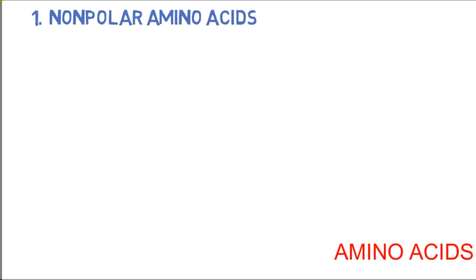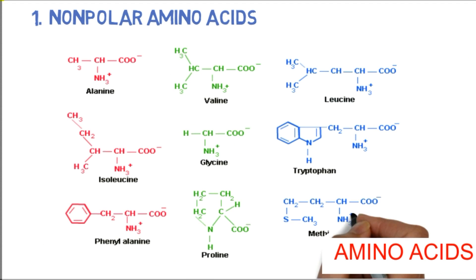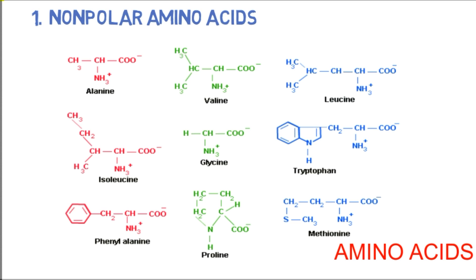The first group is non-polar amino acids. There are nine different amino acids in the non-polar R group: alanine, valine, leucine, isoleucine, glycine, tryptophan, phenylalanine, proline, and methionine.